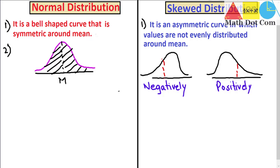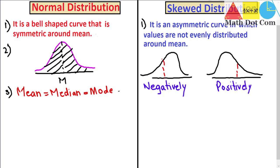Another difference is that in normal distribution we have mean equals to median equals to mode — all these values are equal. While in case of skewed distribution, they are not equal.